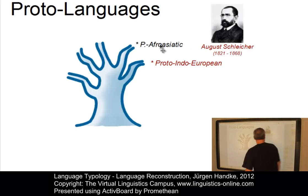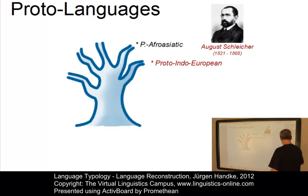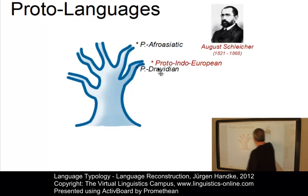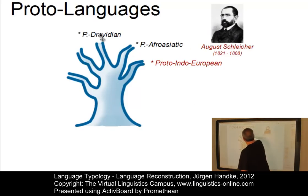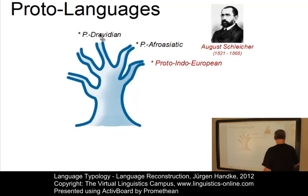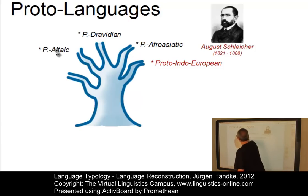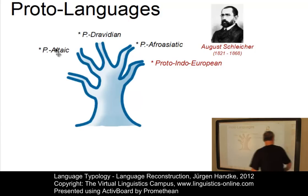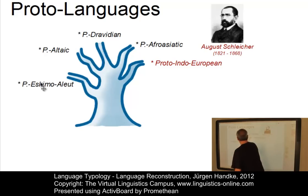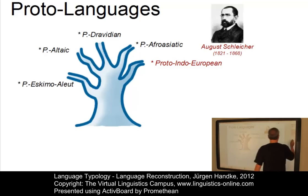Other reconstructed languages are, for example, proto-Afro-Asiatic, proto-Dravidian, proto-Altaic, and proto-Eskimo-Aleut.